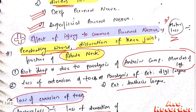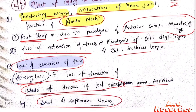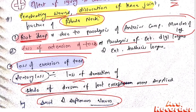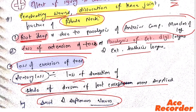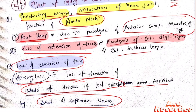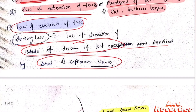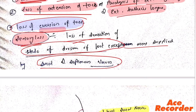In terms of motor loss: foot drop, loss of extension of toes, paralysis of extensor digitorum longus and extensor hallucis longus, and loss of eversion of the foot.